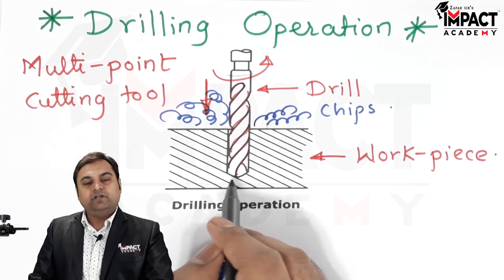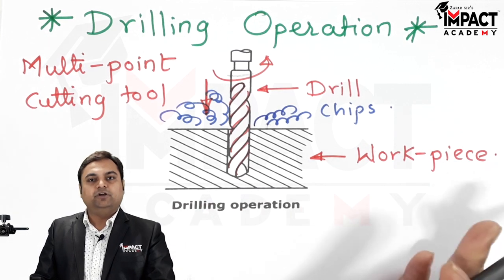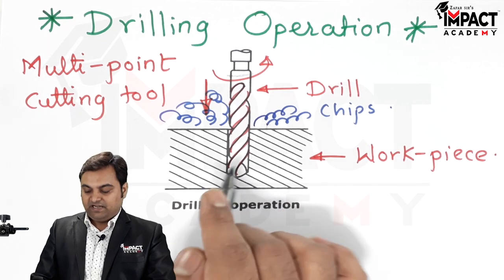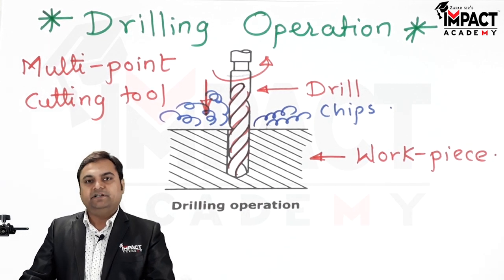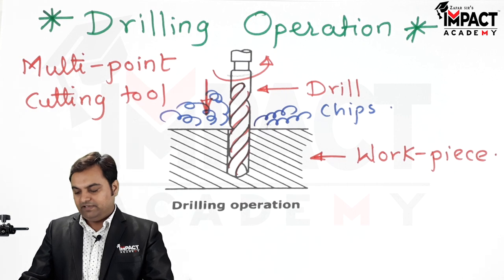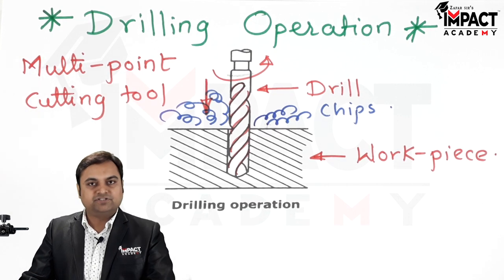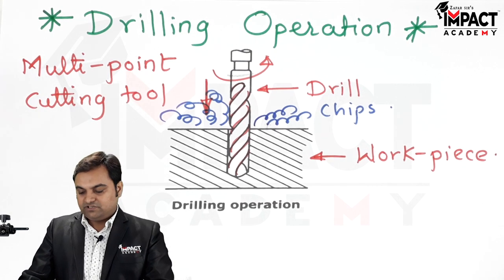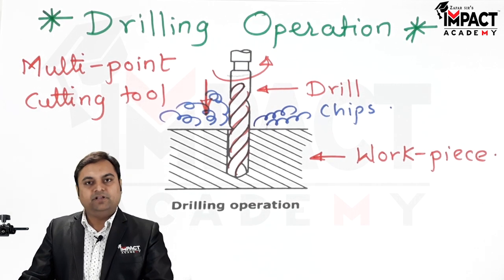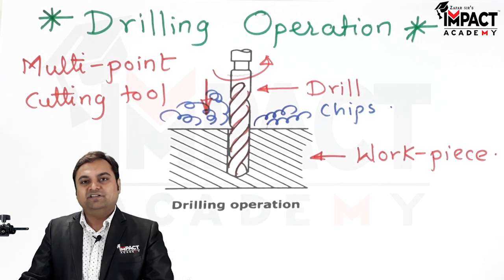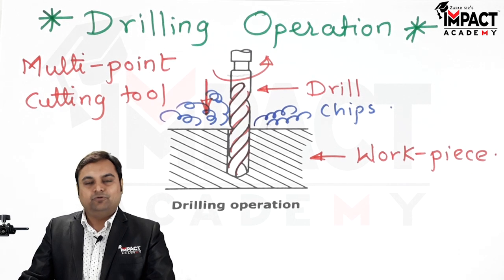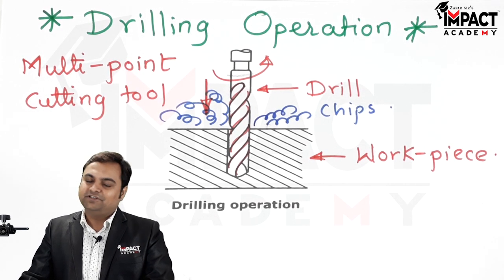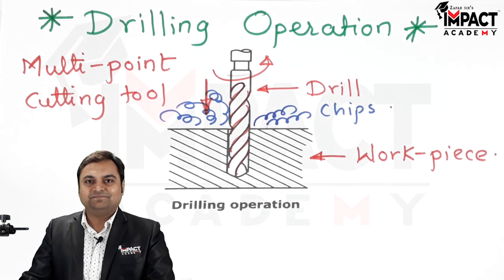This is one of the primary machining operations which is performed. After drilling, we can go for the remaining operations — that is, either boring, reaming, tapping, or any other given operation. So this is one of the primary hole-generating operations. In short, that was an explanation regarding the drilling operation.